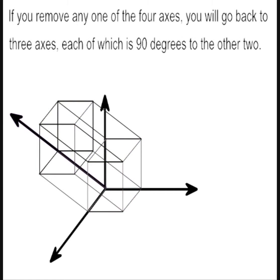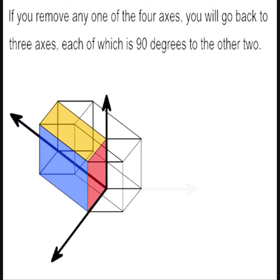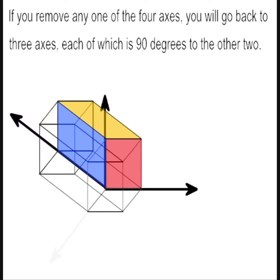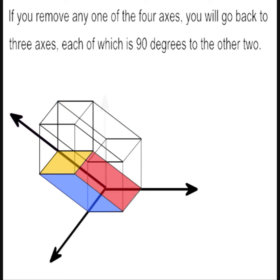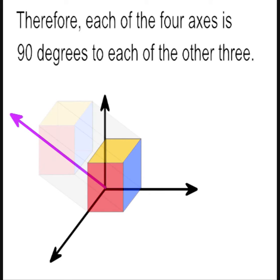If you remove any one of the four axes, you will go back to three axes, each of which is 90 degrees to the other two. Therefore, each of the four axes is 90 degrees to each of the other three.